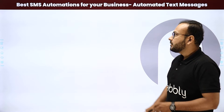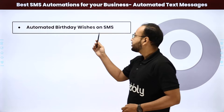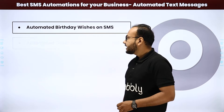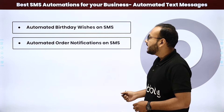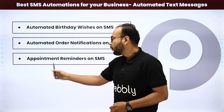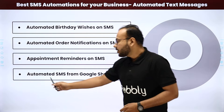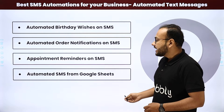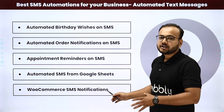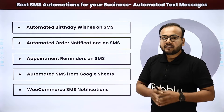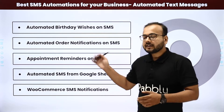Let's see the list of automations that we have. The first automation is automated birthday wishes on SMS. The second is automated order notifications on SMS. The third is appointment reminders on SMS. The fourth is automated SMS from Google Sheets. And last but not least, we have WooCommerce SMS notifications.